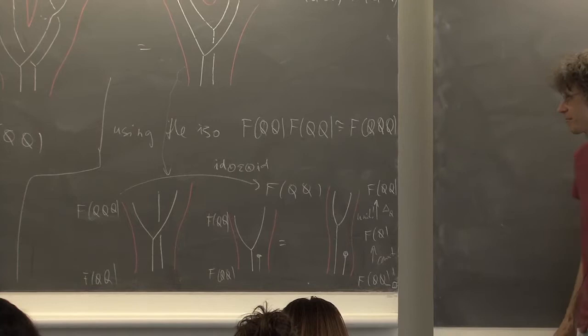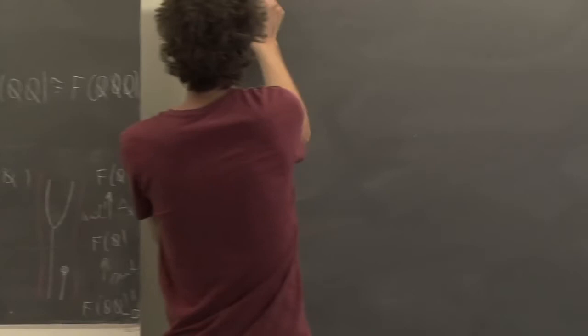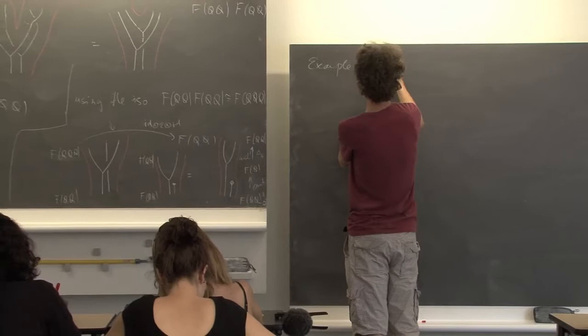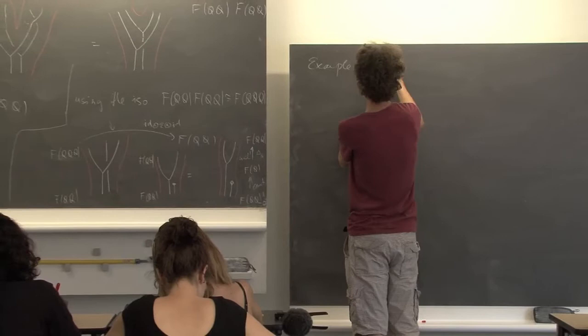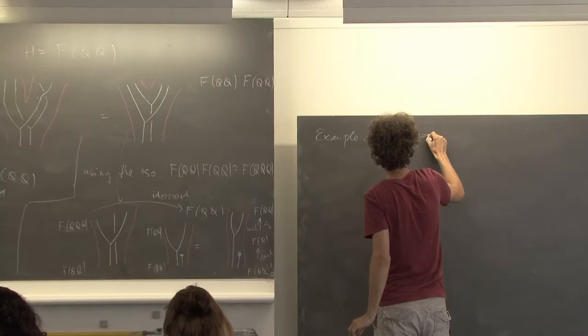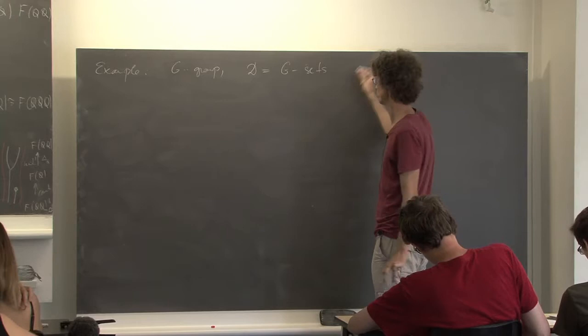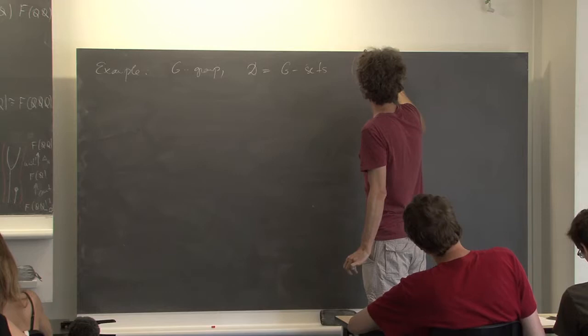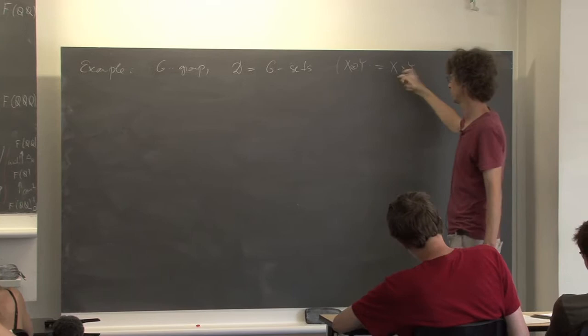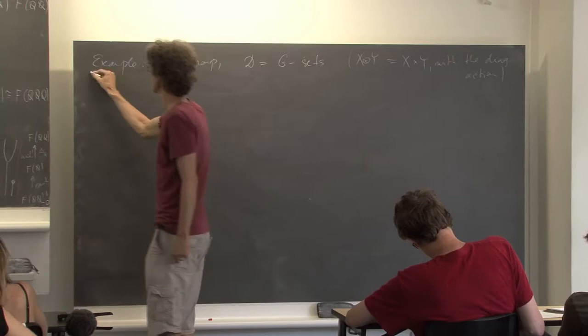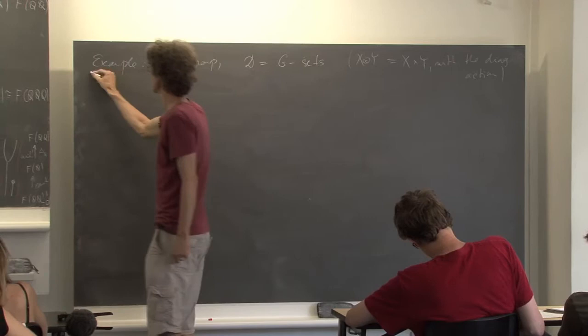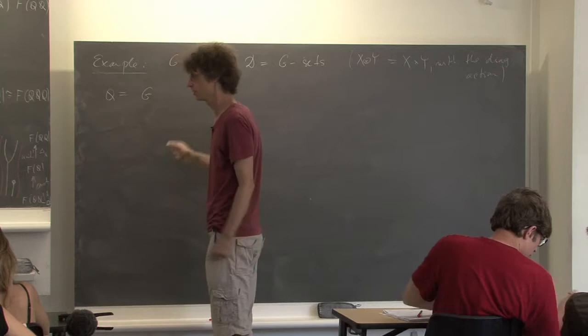Okay cool. Now let's look at first some two silly examples, and finally the real example. For D I would start with: D is a group, D is the category of G-sets, which is a symmetric monoidal category. You can imagine that the tensor product is defined as the same thing as the Cartesian product, and the action is the diagonal.